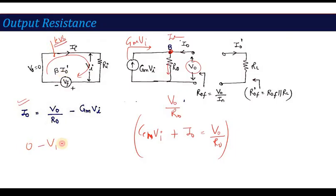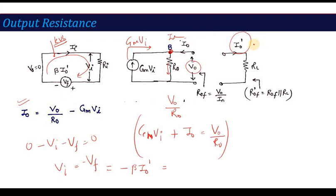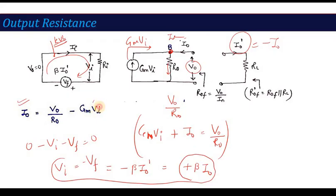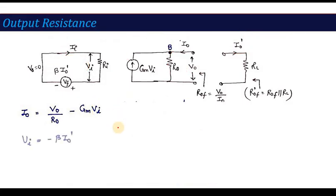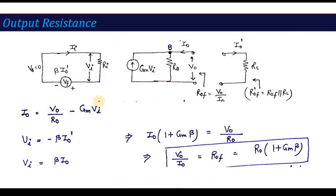Substituting vi = beta*i0 into the KCL equation: i0 = v0/r0 − gm*(beta*i0). Collecting i0 terms on the left: i0*(1 + gm*beta) = v0/r0. Therefore, output resistance Rof = v0/i0 = r0*(1 + gm*beta). The output resistance is increased by the factor (1 + gm*beta).